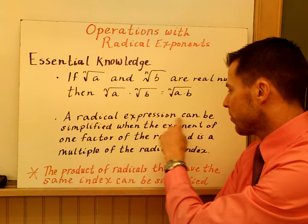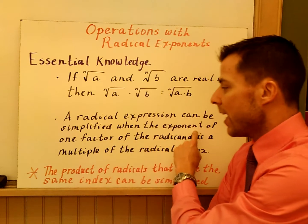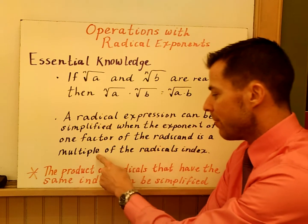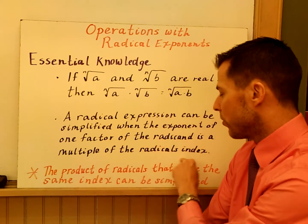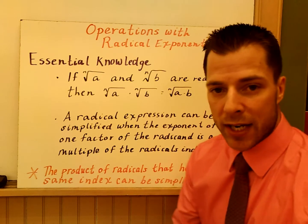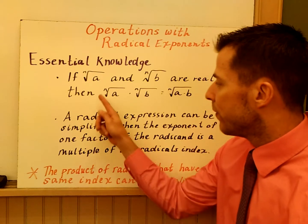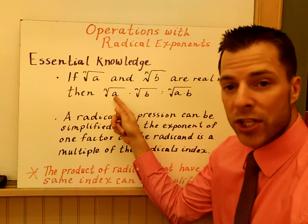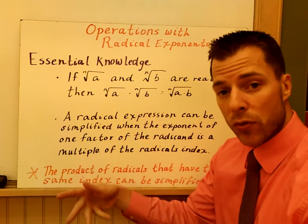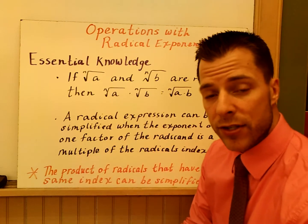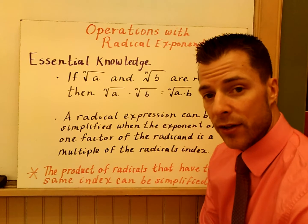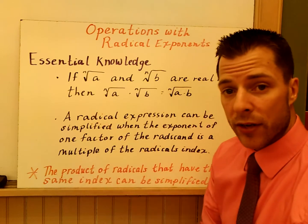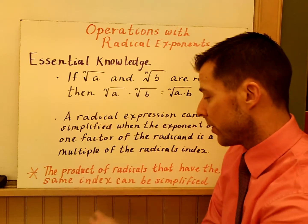A radical expression can be simplified when the exponent of one factor of the radicand is a multiple of the radical's index. For example, if you have the fourth root of x to the twelfth, 12 has factors of 4, so we'll be able to simplify. You'll see those two big ideas throughout the examples.